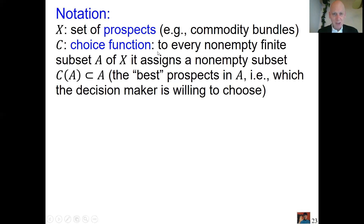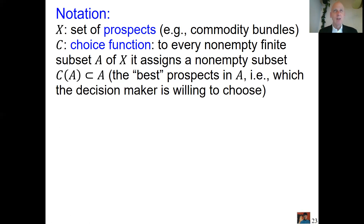You've seen similar things in consumer demand theory where capital C was the demand function and you chose from budget sets. Here we assume you choose from finite subsets, keeping the mathematics a bit simpler. For every finite subset you choose a non-empty subset — interpreted as the best prospects available. Maybe it's one prospect, or maybe if several are equally good, they're all in that best subset, denoted C(A) for a set A.